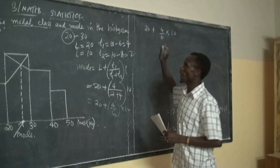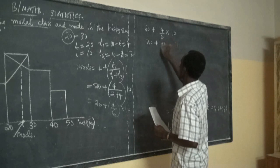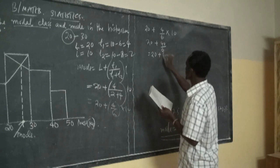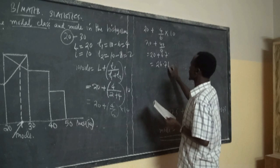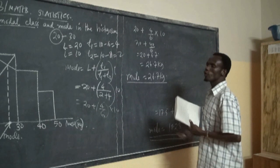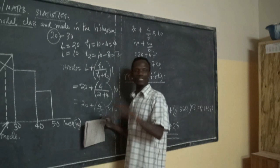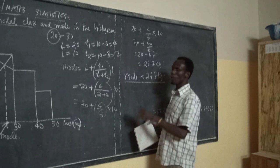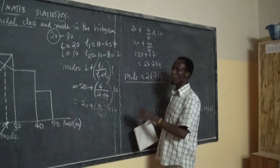The mode is equal to 26.7. You can choose whether to use the graphical method or the formula — whichever you are told to use. This is something very important that you need to understand. That is the end of the module.